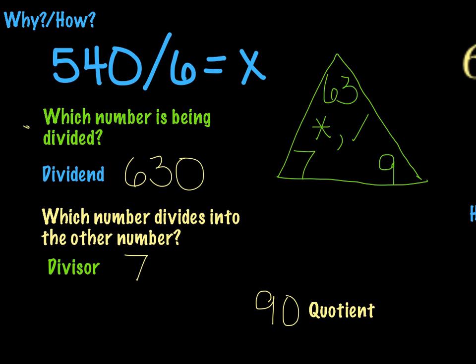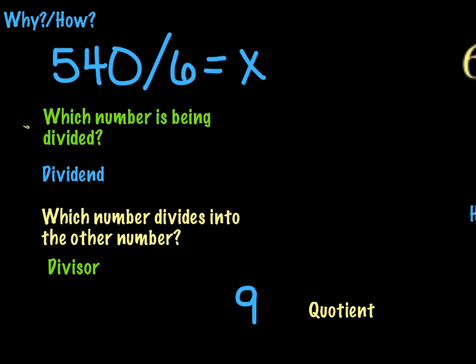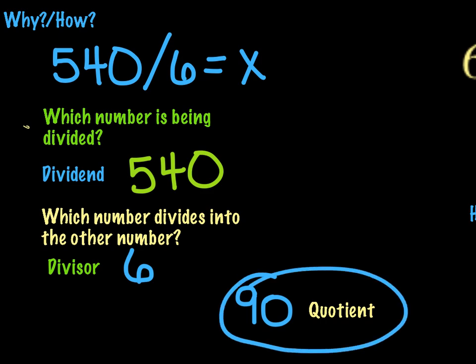So our quotient in this particular problem would be 90. And then if we go back to our questions that we started with, which number is being divided? That would be the 540. Which number divides into the other number? That would be 6. And we've already said what our quotient is, which is the 90.